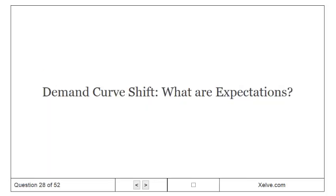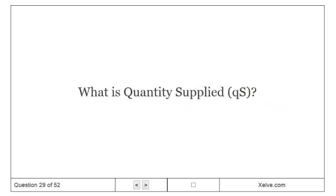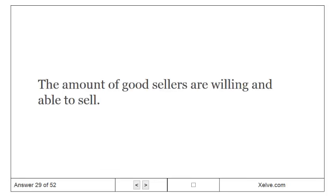What are expectations? Factors that affect consumer buying, usually influenced by media and health industries, can shift the demand curve left or right. What is quantity supplied? The amount of goods sellers are willing and able to sell.